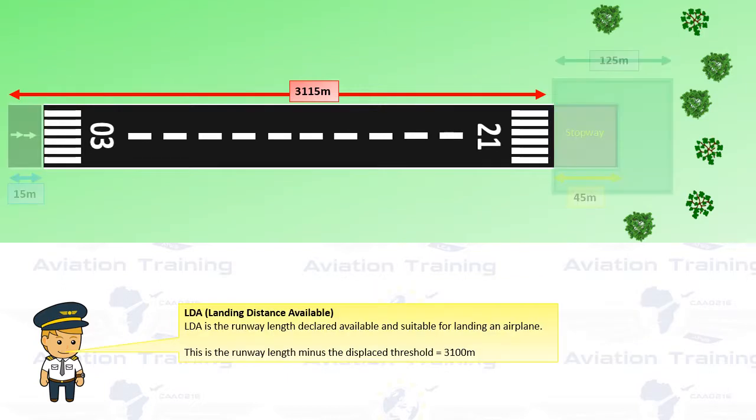Landing Distance Available is the runway length declared available and suitable for landing an aircraft. This is the runway length minus the displaced threshold.